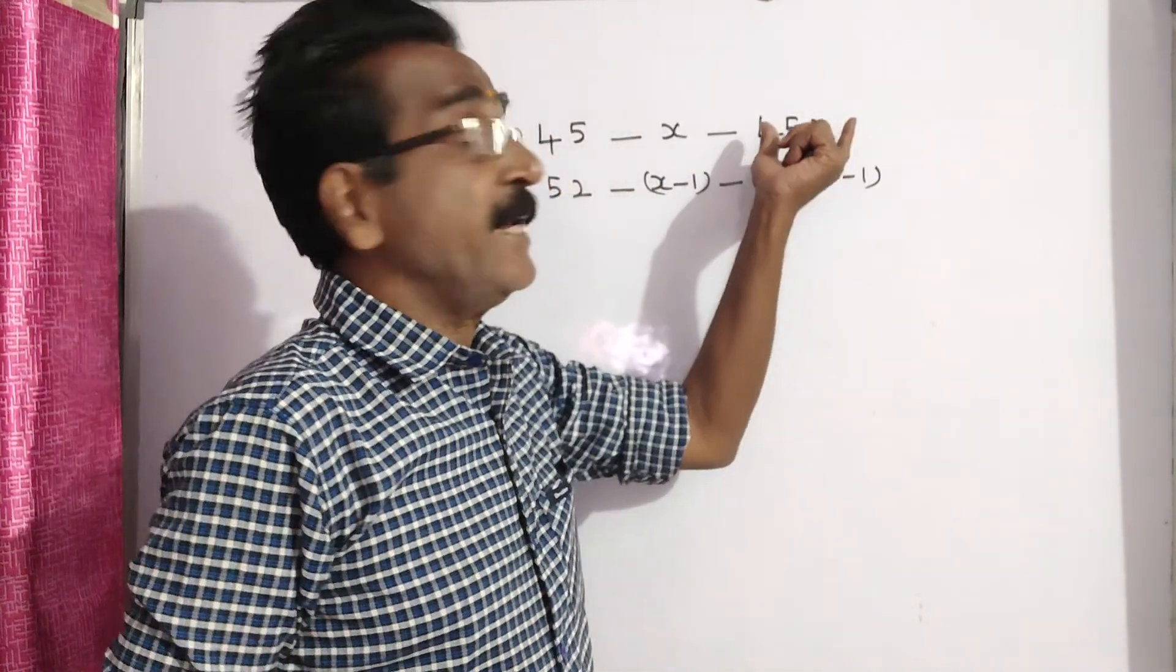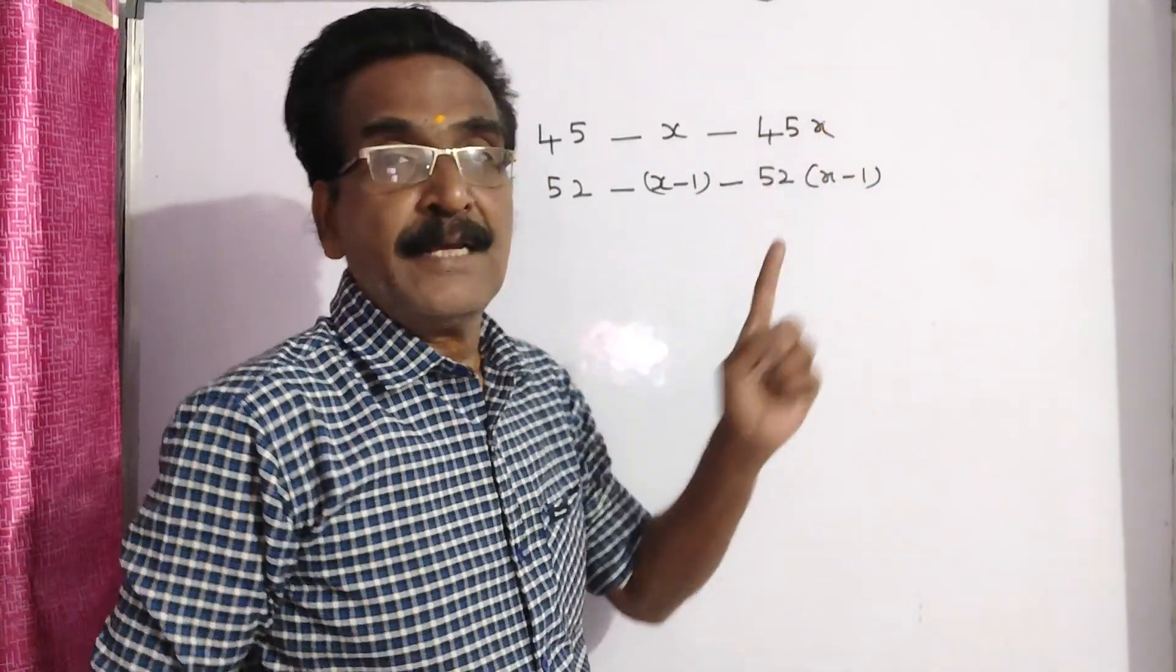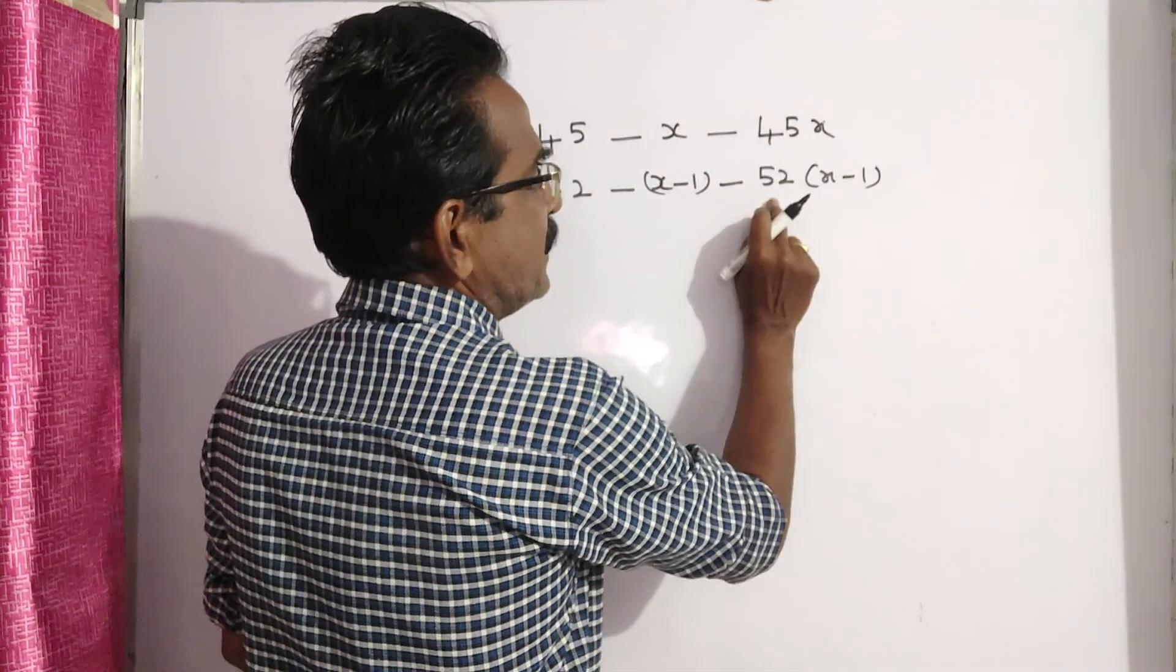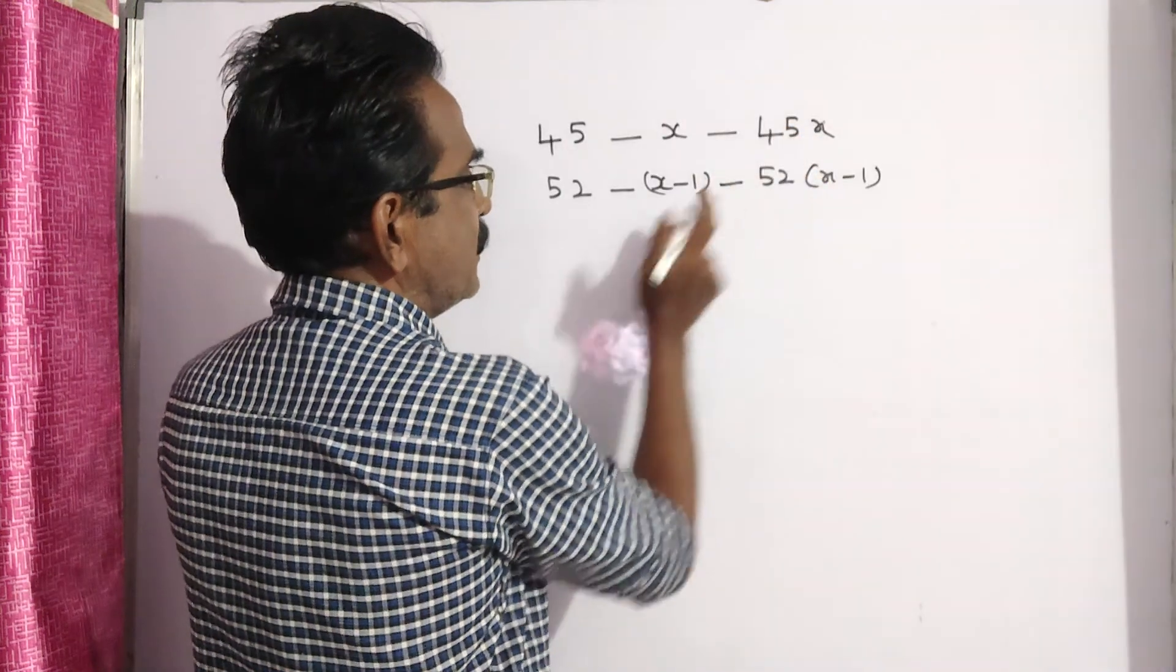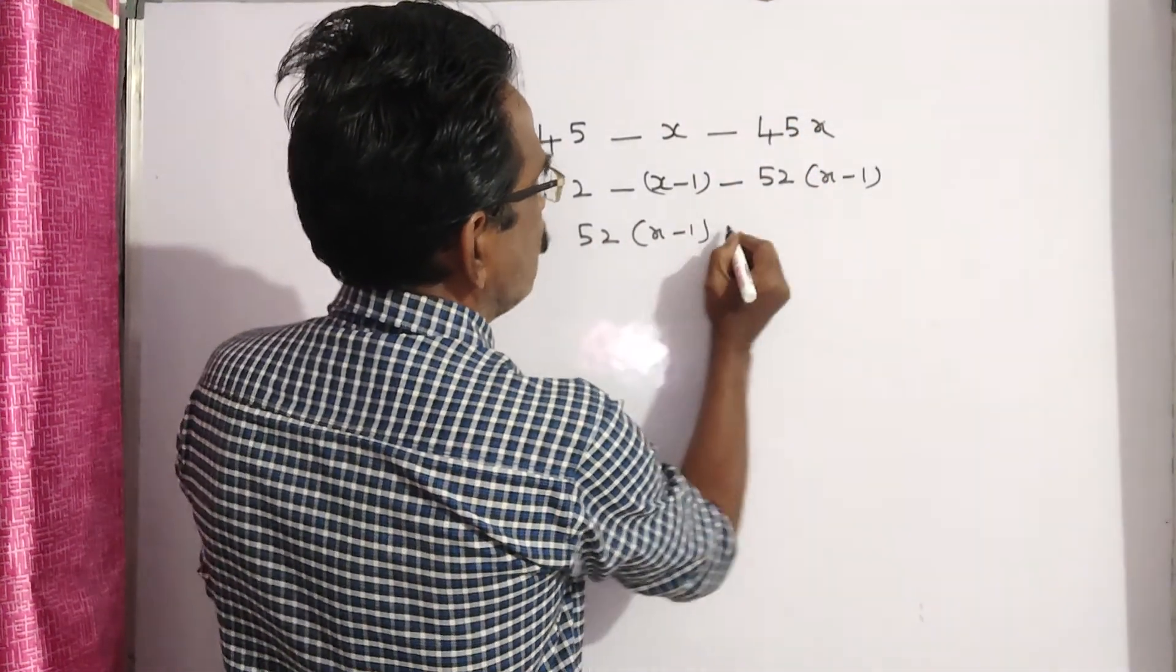But the total expenses per day increased by rupees 39. That means this minus this, the total expenditure after the new students joined, this minus this must be equal to 39. 52 into x minus 1 minus 45x is equal to 39.